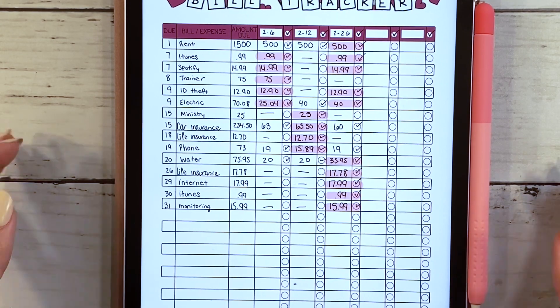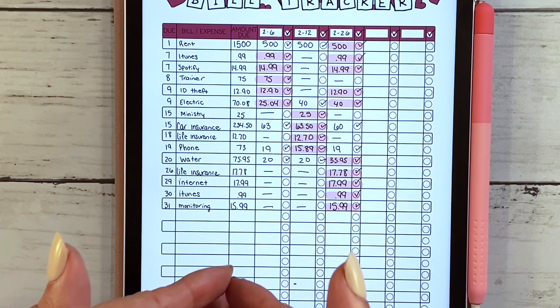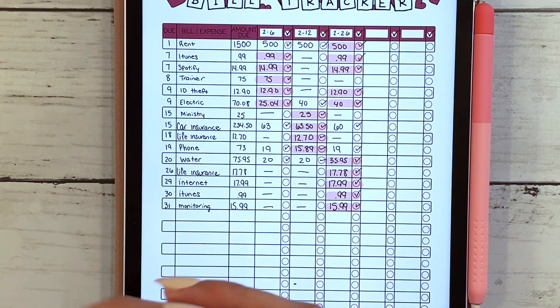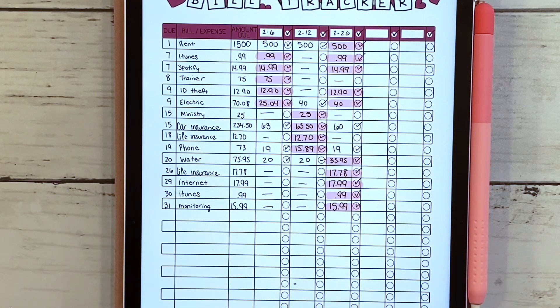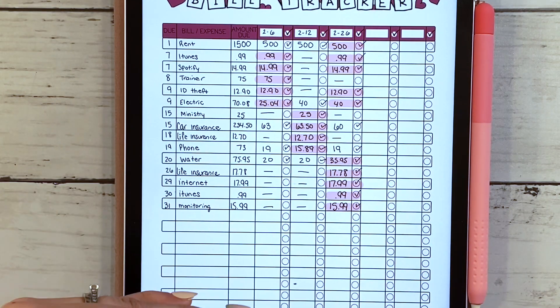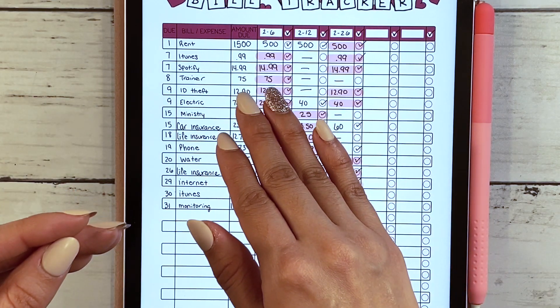The first thing you're going to want to do is list out all of your fixed expenses. These are items that have a set dollar amount and a set due date. You're going to want to list it out exactly in order of when they come out and put the total due.